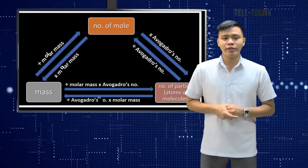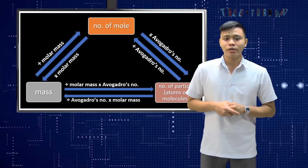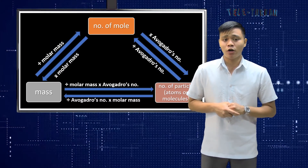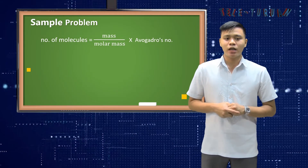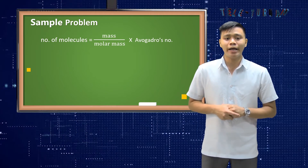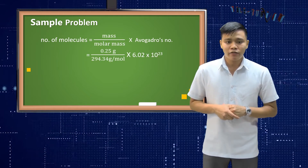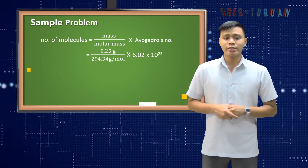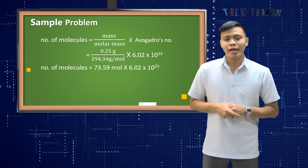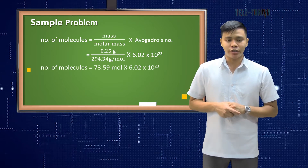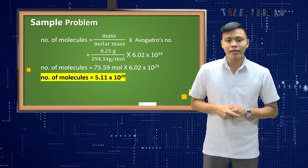Another method for solving this problem is by using the diagram presented earlier. This problem requires us to convert from mass to number of particles or molecules. The formula is: number of molecules equals mass divided by molar mass times Avogadro's number. That is 0.25 grams divided by 294.34 grams per mole times 6.02 × 10²³, giving a final answer of 5.11 × 10²⁰ molecules.